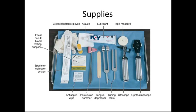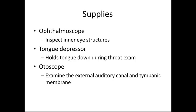Here is an example of supplies that may be used for the primary physical exam. Each physician may request slightly different items, but this covers what is generally required. The ophthalmoscope inspects the inner eye structures. The tongue depressor holds down the tongue during the throat exam. The otoscope examines the external auditory canal and the tympanic membrane, used by both the physician and the medical assistant during ear wash or ear lavage procedures.